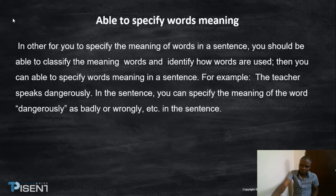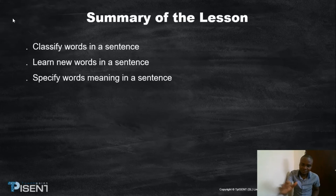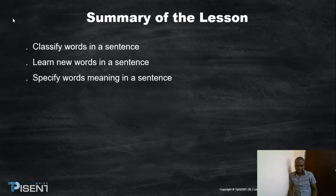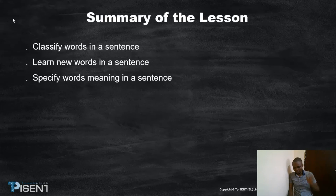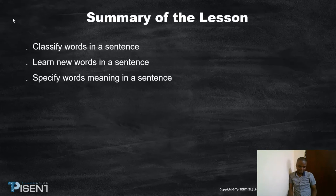Let's look at the summary of this lesson. The first summary point is for you to classify words in a sentence. The second one is to learn new words in a sentence. The third one is to specify words in a sentence, so you are able to make statements correctly and specifically.